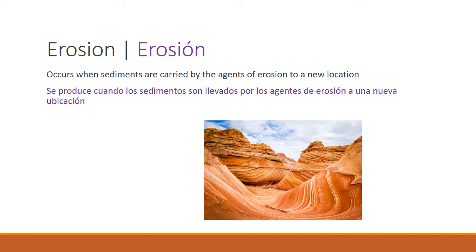Erosion occurs when sediments are carried by agents of erosion to a new location. Thinking back to the water cycle, a good example is runoff from a higher elevation that eventually plateaus and results in deposited layers. The different streaks visible here represent layers of sediment carried to a new location and left to rest.